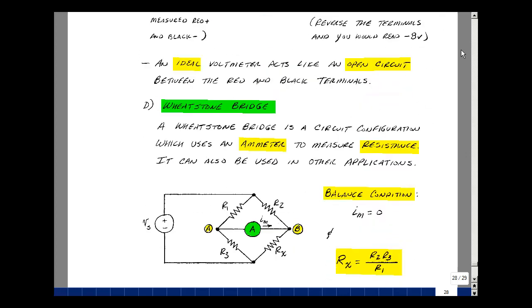The last measurement device is actually a circuit called a Wheatstone bridge. It's a circuit that uses an ammeter to measure resistance. It can also be used in other applications. The most common we'll see in lab is a scope probe. We have four resistors. We're trying to measure the unknown resistor called R sub x. If you can vary one of the four resistors such that the current in the ammeter is zero, then the resistor R sub x equals R2 times R3 divided by R1.